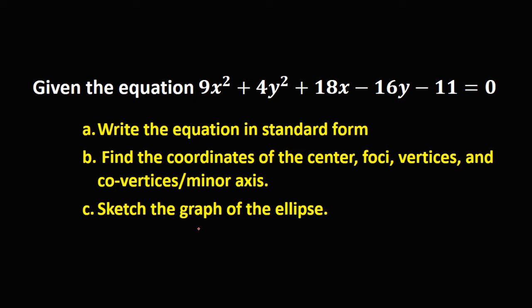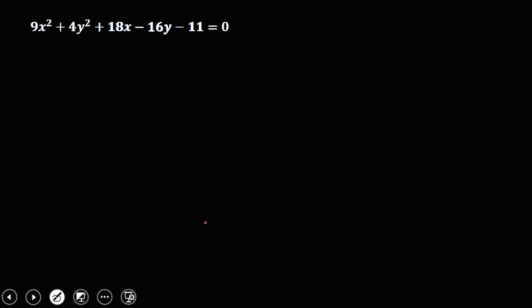Given the equation 9x² + 4y² + 18x - 16y - 11 = 0, we need to write this in standard form and find the coordinates of the center, foci, vertices, and minor axis, then graph it. This is the equation of an ellipse. First, group all x-terms and y-terms together, and transpose the constant to the right side. We have the first group: 9x² + 18x, and the second group: 4y² - 16y, and negative 11 becomes positive 11.